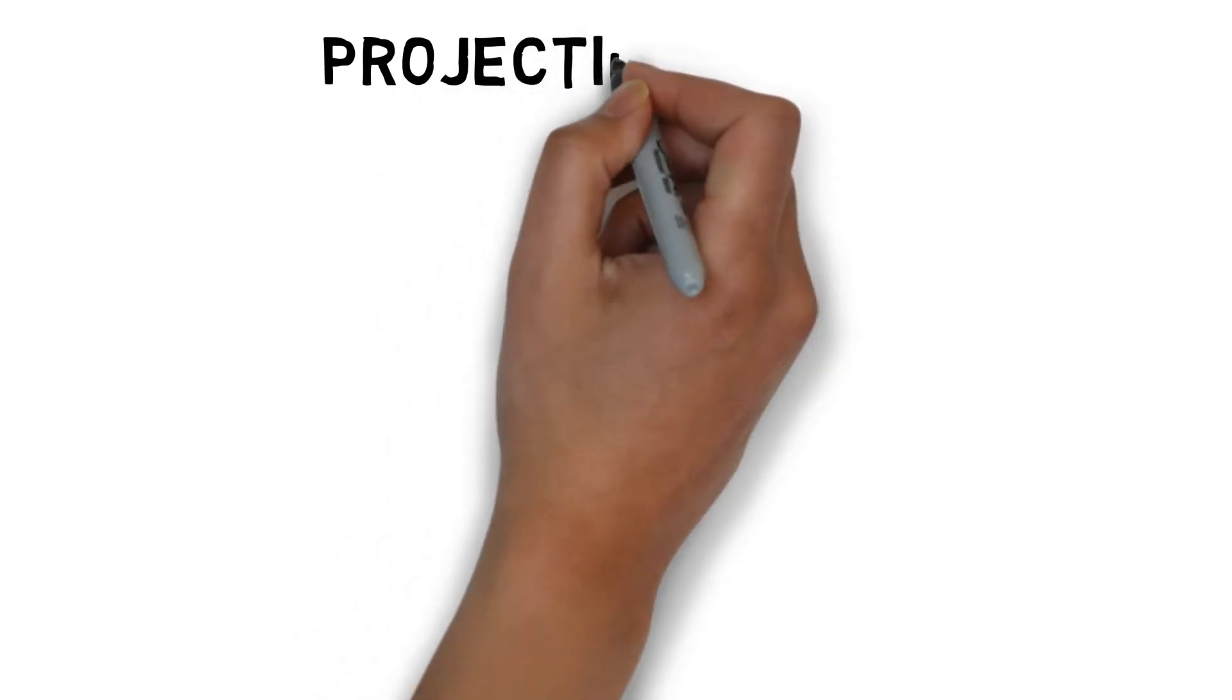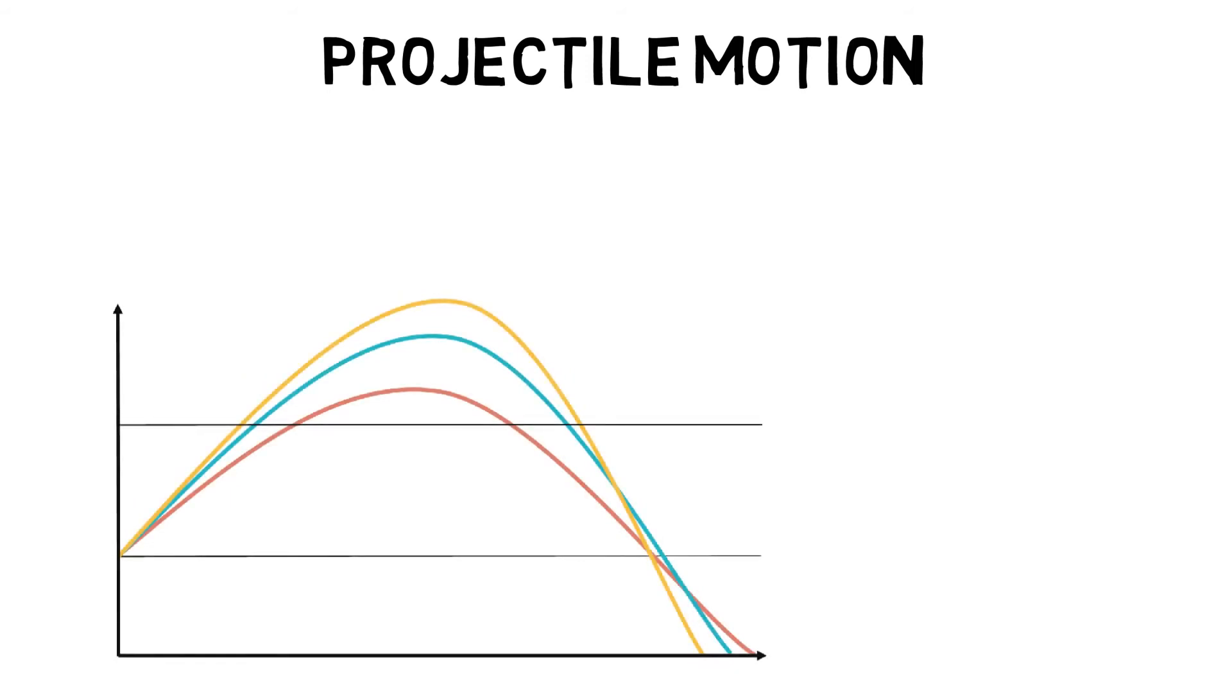Projectile motion looks at objects that are in flight. They can be our bodies flying through the air off a diving board or a javelin being launched as far as possible.